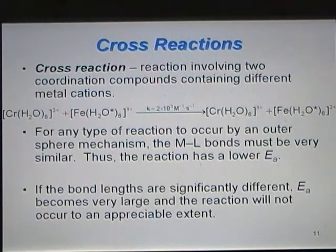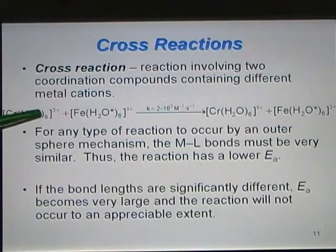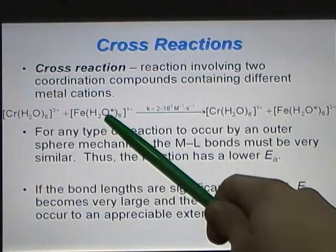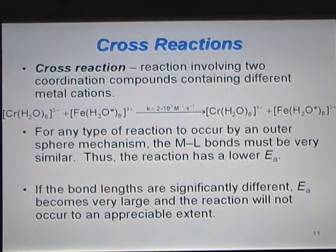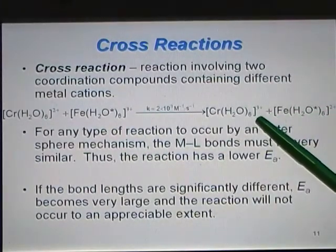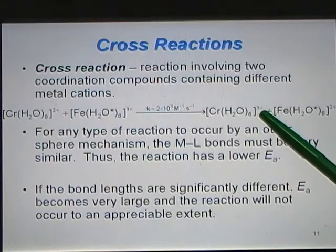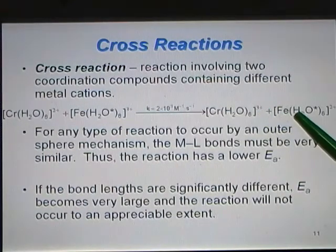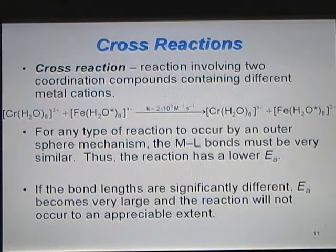A cross reaction involves two different coordination compounds containing different metal cations. For example, in this reaction, chromium H2O6 2+ will react with radio labeled Fe H2O6 3+, forming Cr H2O6 3+ and Fe H2O star 6 2+.